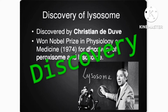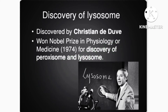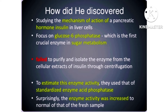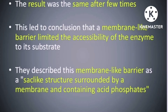Discovery of lysosomes: lysosomes were discovered by Christian de Duve in 1955. He later won the Nobel Prize for the discovery of peroxisomes and lysosomes in 1974. He was working on the hormone insulin and studied glucose-6-phosphatase, a crucial enzyme in sugar metabolism, and through centrifugation was able to isolate these organelles.